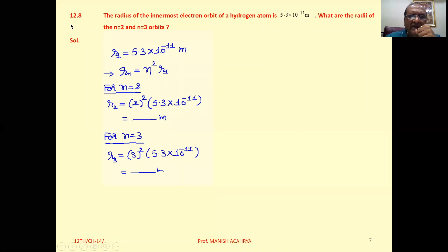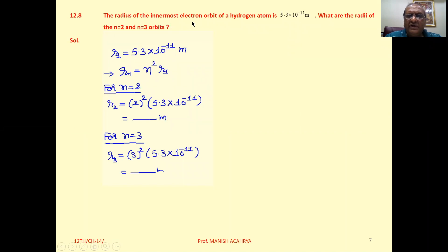Next one, 12.8. The radius of the innermost electron orbit of a hydrogen atom is 5.3 × 10^-11 meter. What are the radii of the n=2 and n=3 orbits?